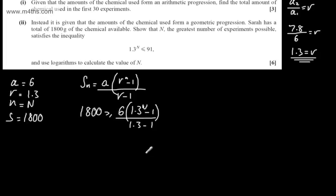So, if we look at this now, what I have is 1.3 minus 1, which is going to give me 0.3. So, I'm going to write that 1,800 must be equal to or greater than 6 divided by 0.3 is going to give me 20. Then, I'm going to have 1.3 to the N minus 1.